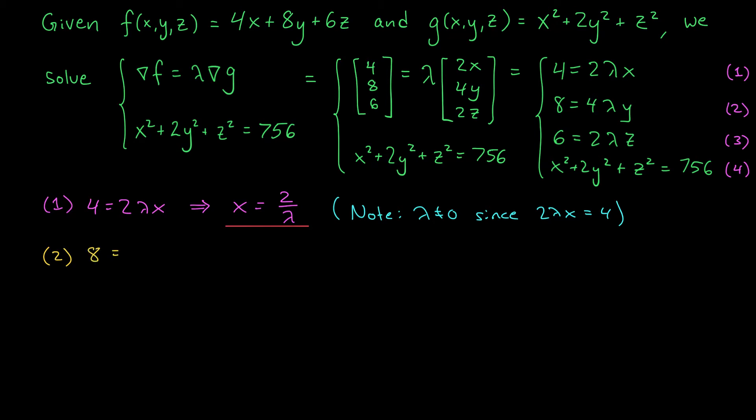Equation 2 says that 8 equals 4 lambda y. So if we divide by 4 lambda, we get y equals 2 over lambda. Similarly, in equation 3, we have 6 equals 2 lambda z. If we divide by 2 lambda, we get z equals 3 over lambda. Okay, fantastic. We have expressions for x, y, z in terms of lambda. Let's now plug these into equation 4.